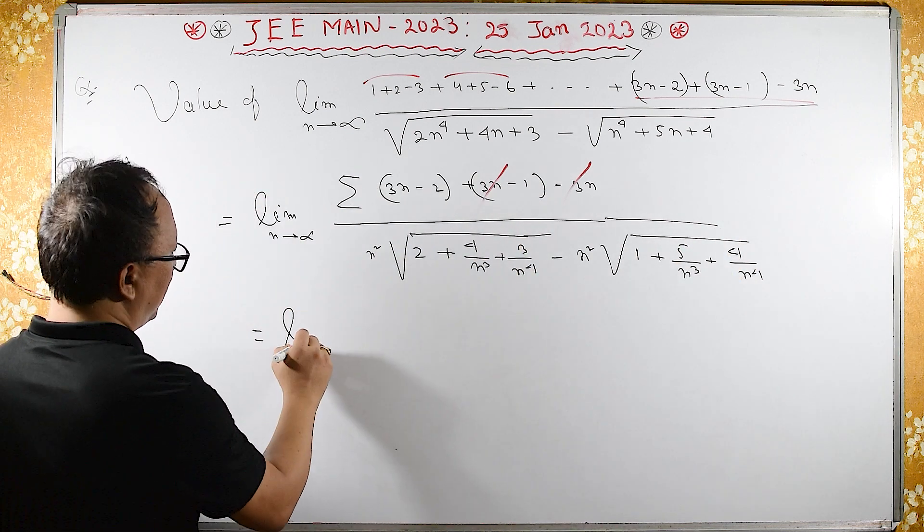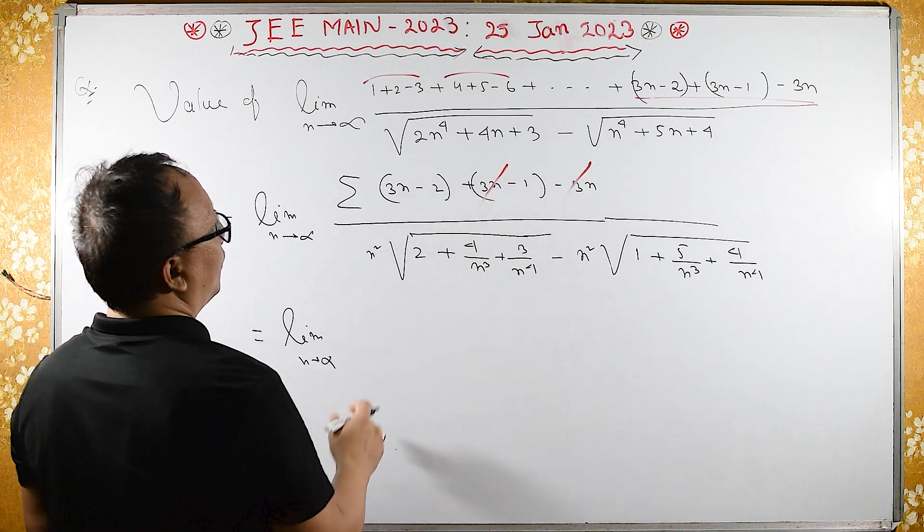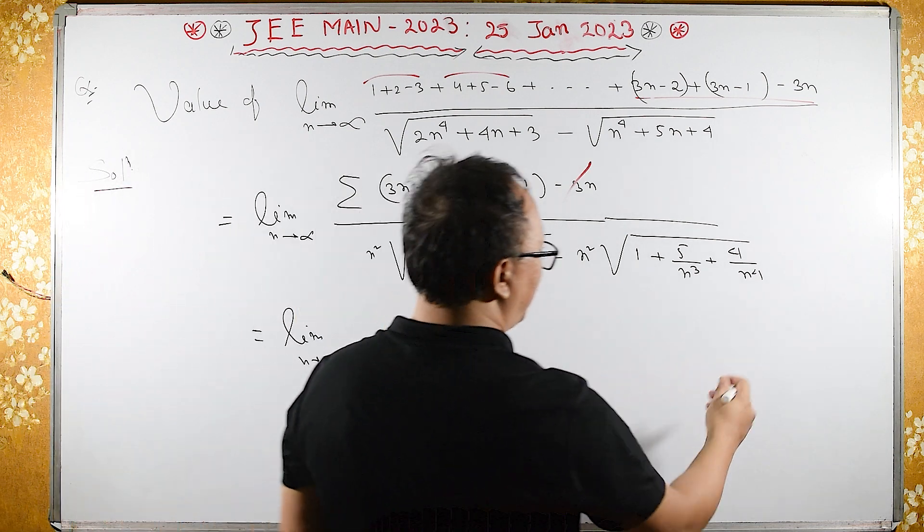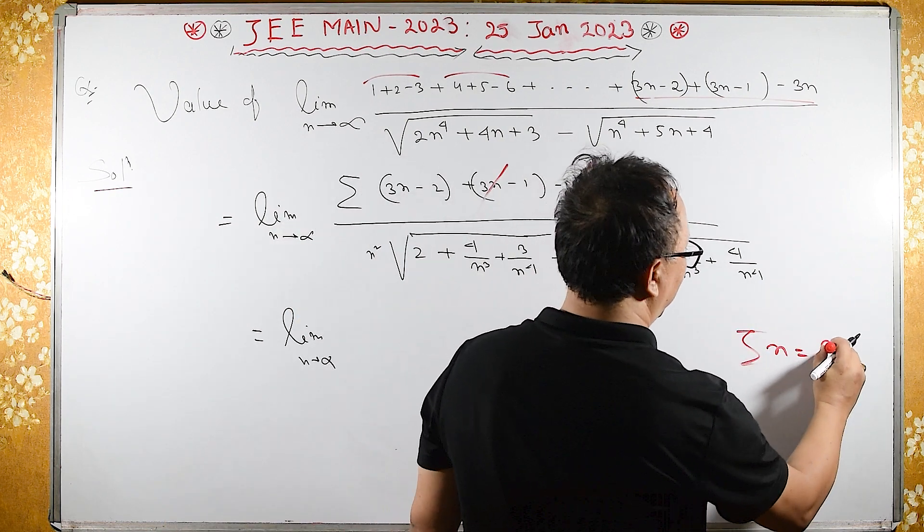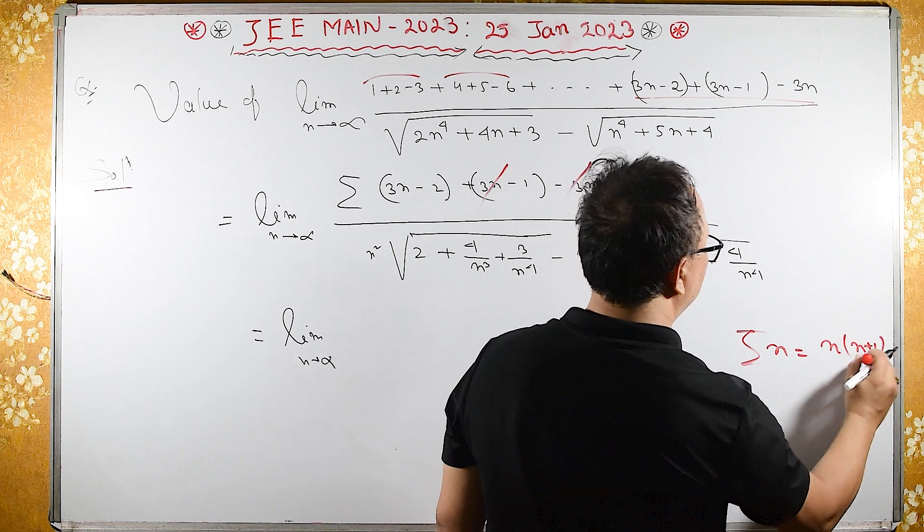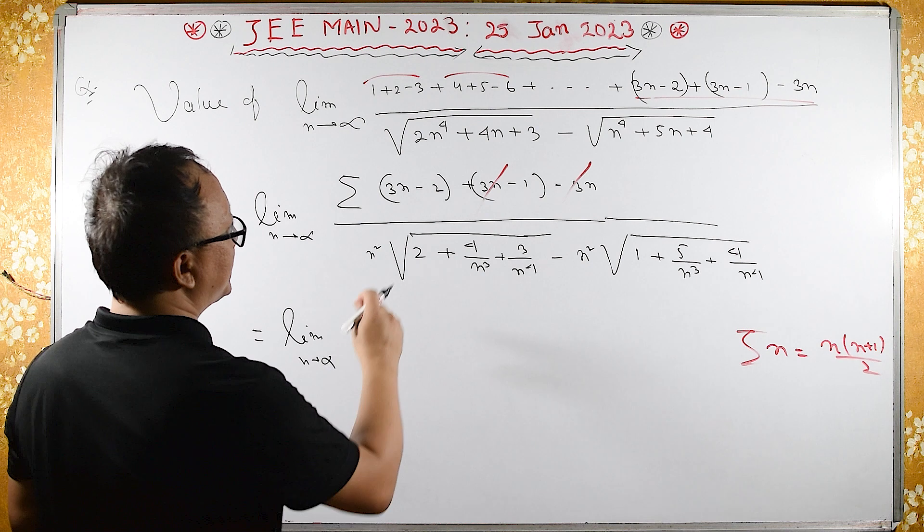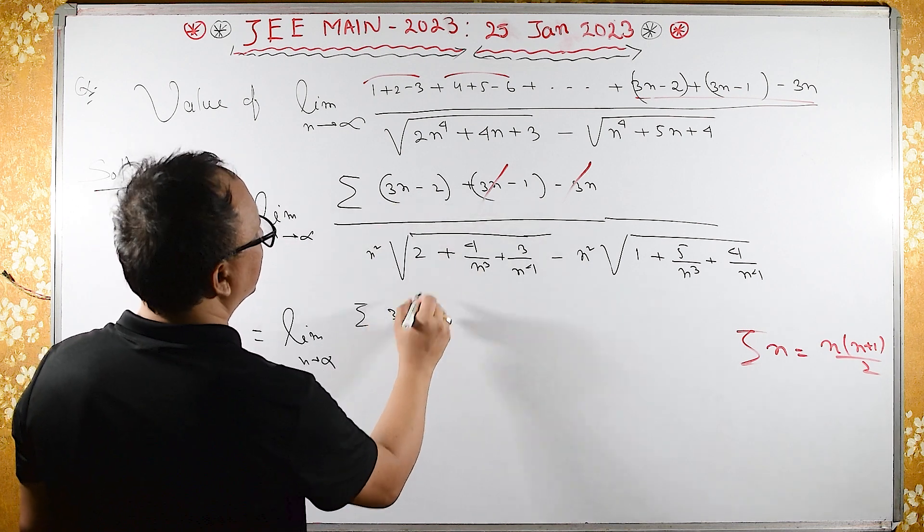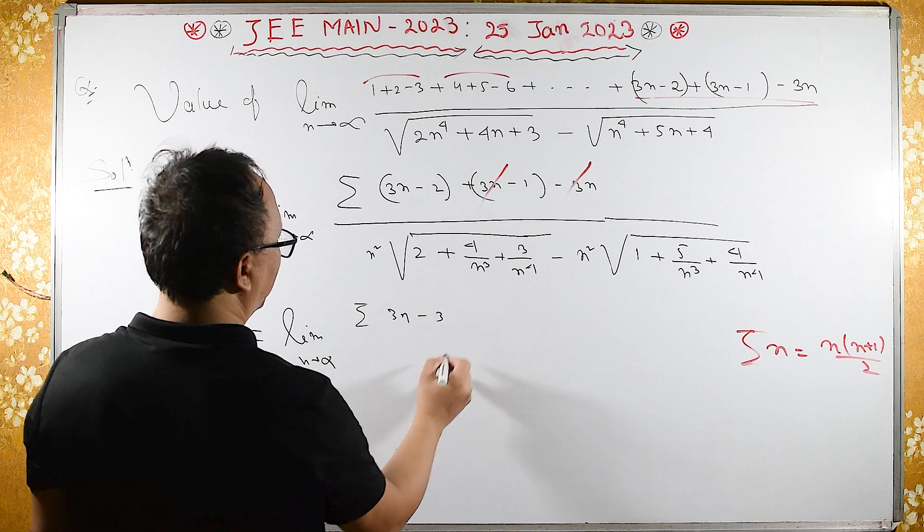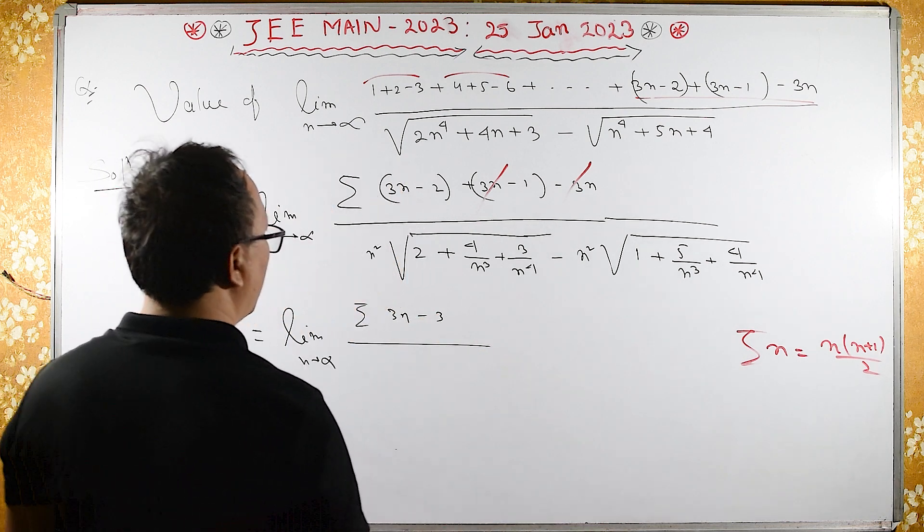And this same as limit of n tends to infinity, over here, what we have, summation of, remember, summation of n, n time is what we have, n into n plus 1 upon 2 we have. So, what we have is, we have here, summation of 3n minus 3, and upon, hold this.